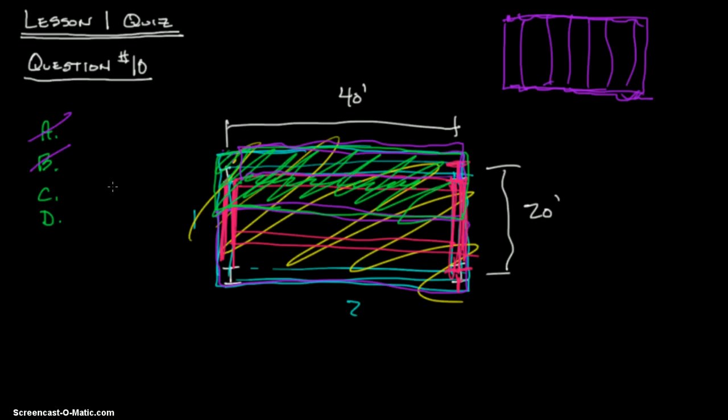Answer C: concrete joist system. That would be typical, similar to this, except it doesn't have to be exactly this. It could be going the opposite way, but you're having joists to break up that length. A wooden joist system might be the best way to go about it as well, so I'm going to say that's no.